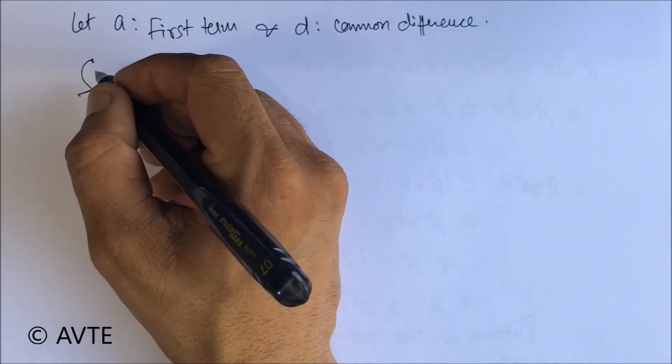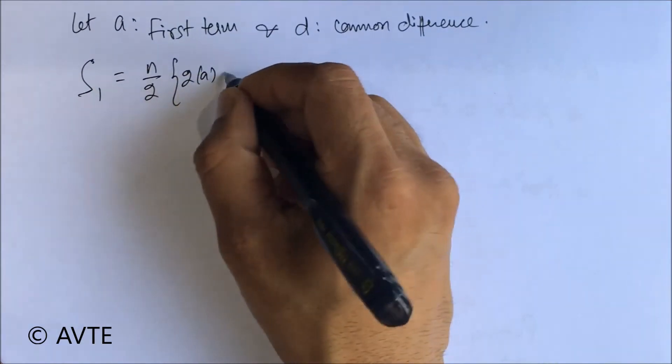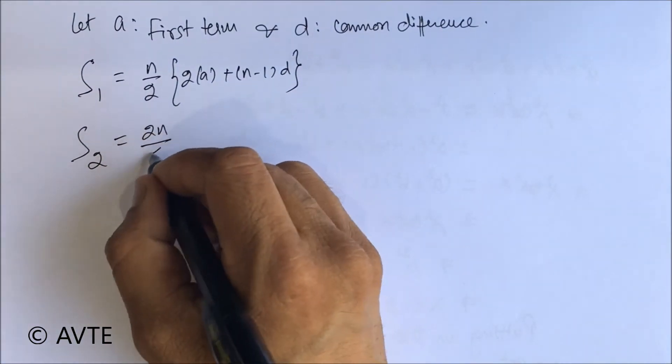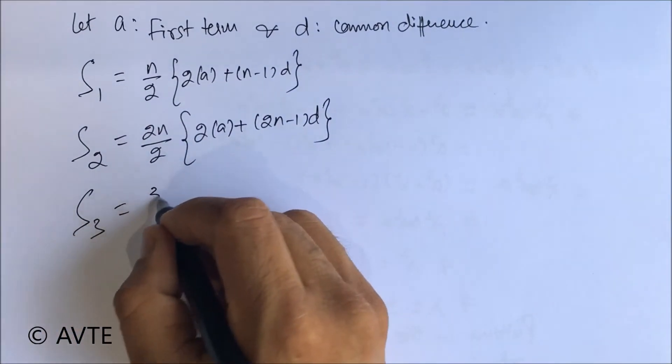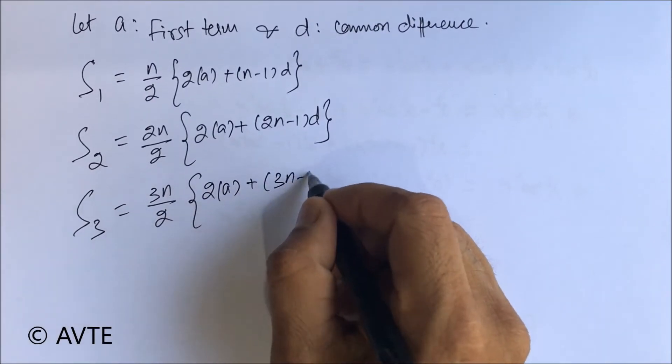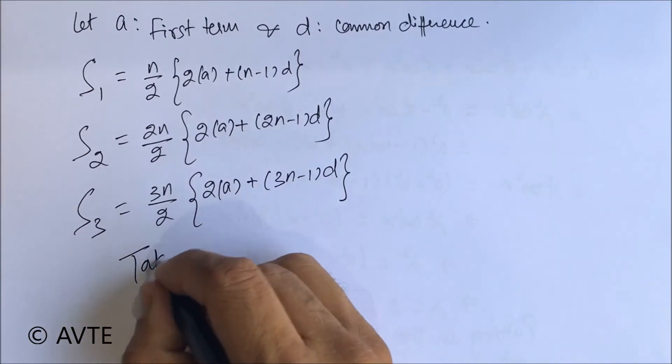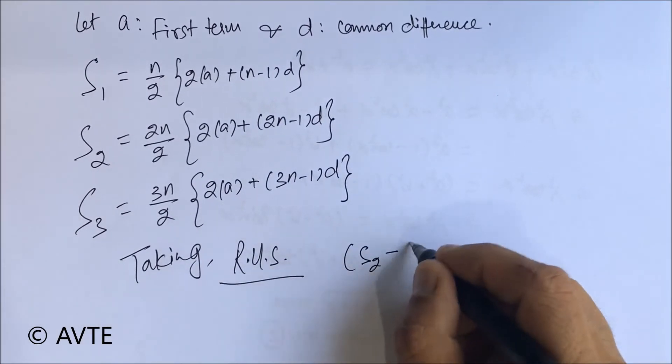What is S1? S2. And S3. Generally we take the left hand side, but this time, because we have to subtract the two expressions and get that to a simple one, we are taking the right hand side and we are doing S2 minus S1.